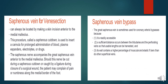The great saphenous vein is commonly used for venous cutdown and coronary artery bypass. In venous cutdown, a small skin incision is taken anterior to the medial malleolus, the saphenous vein is cut down and a small cannula is inserted for prolonged intravenous administration. In coronary artery bypass, the great saphenous vein is also preferred because it is readily accessible.